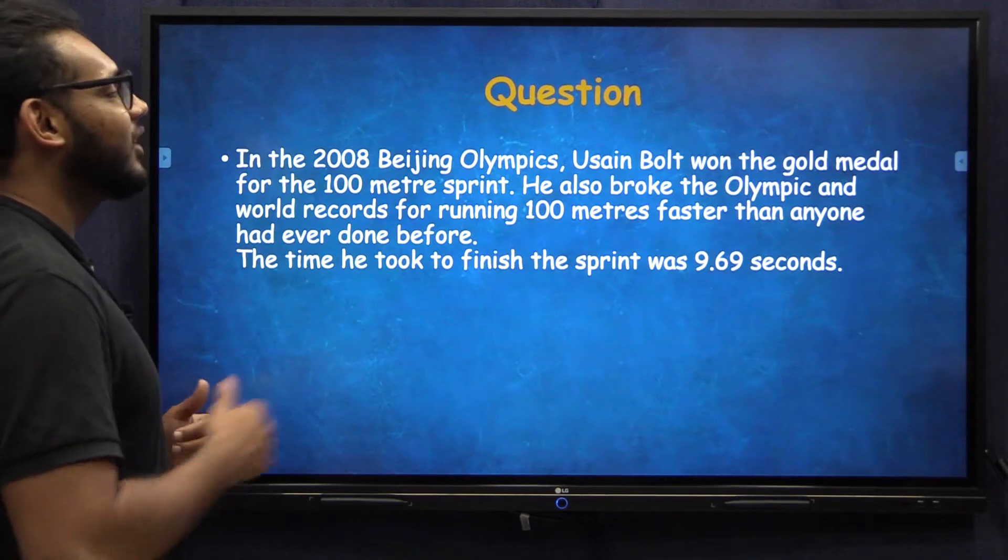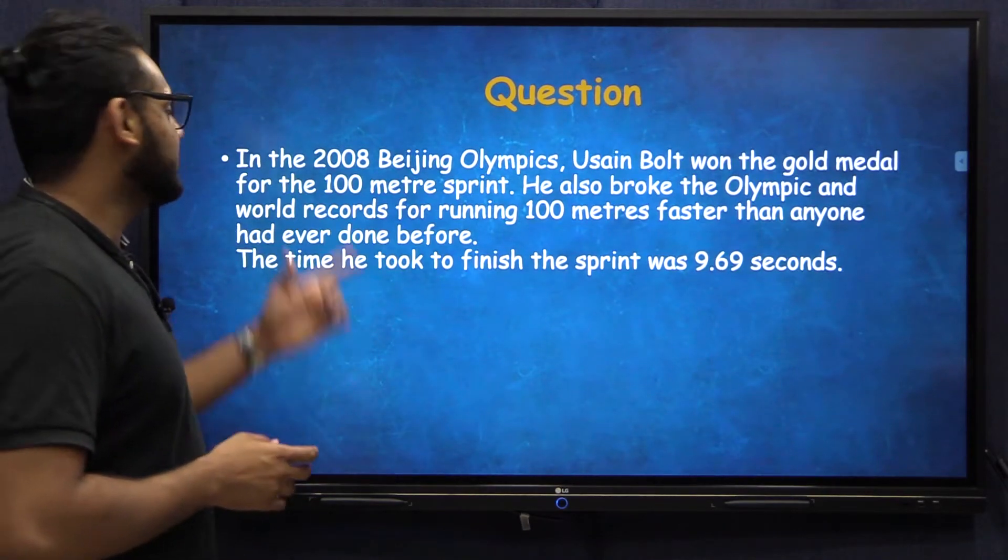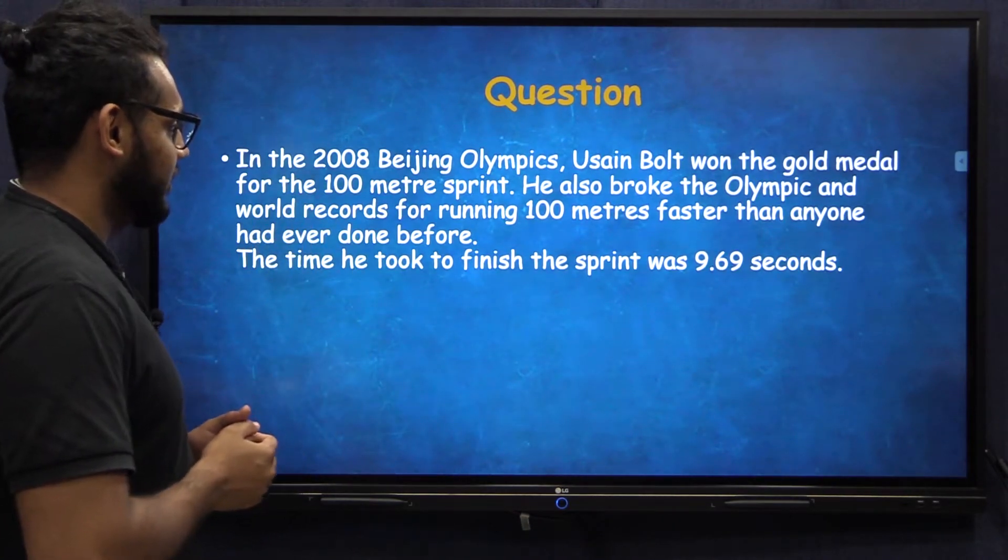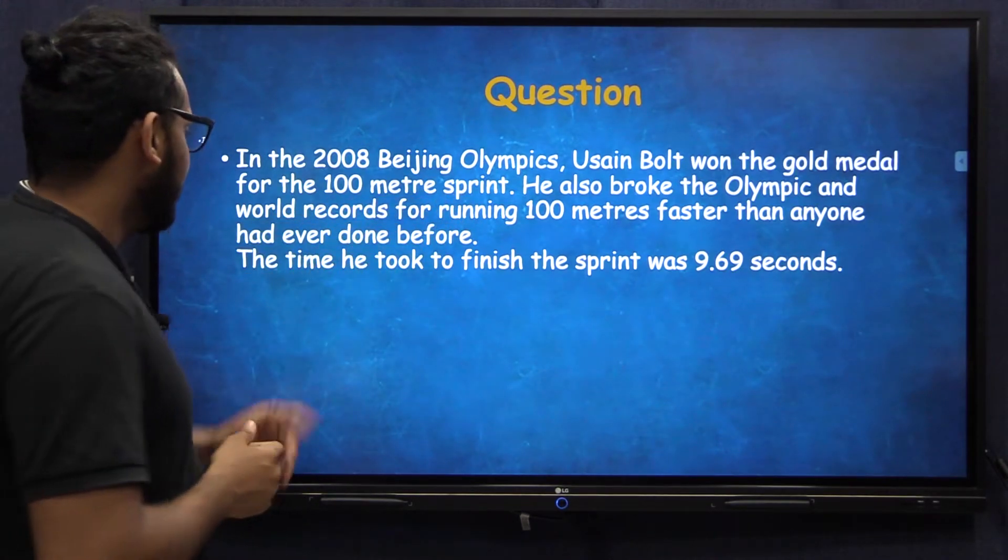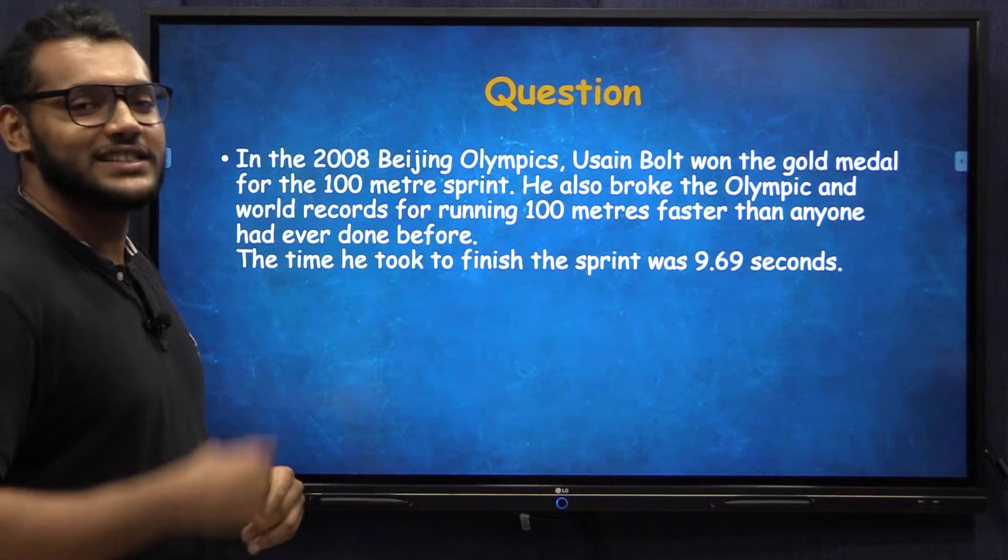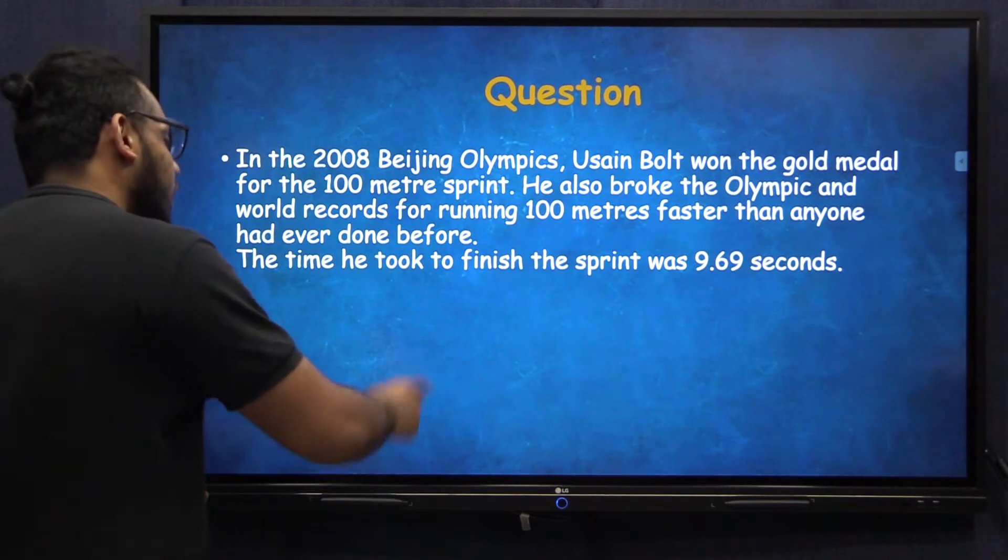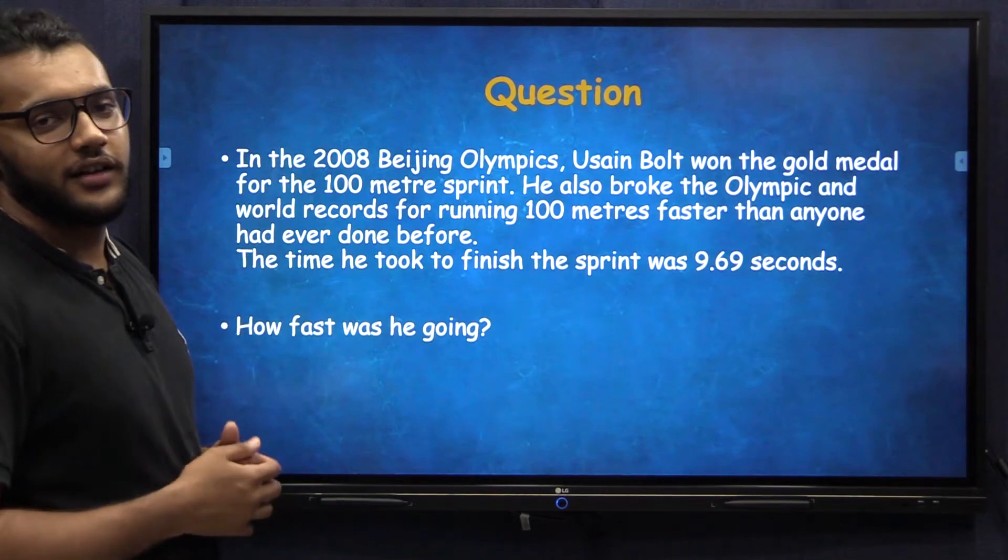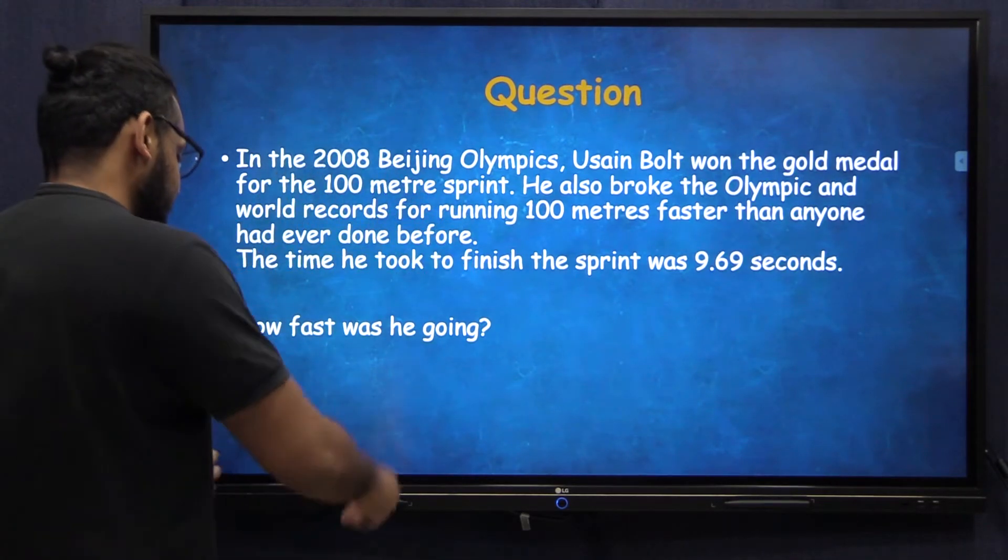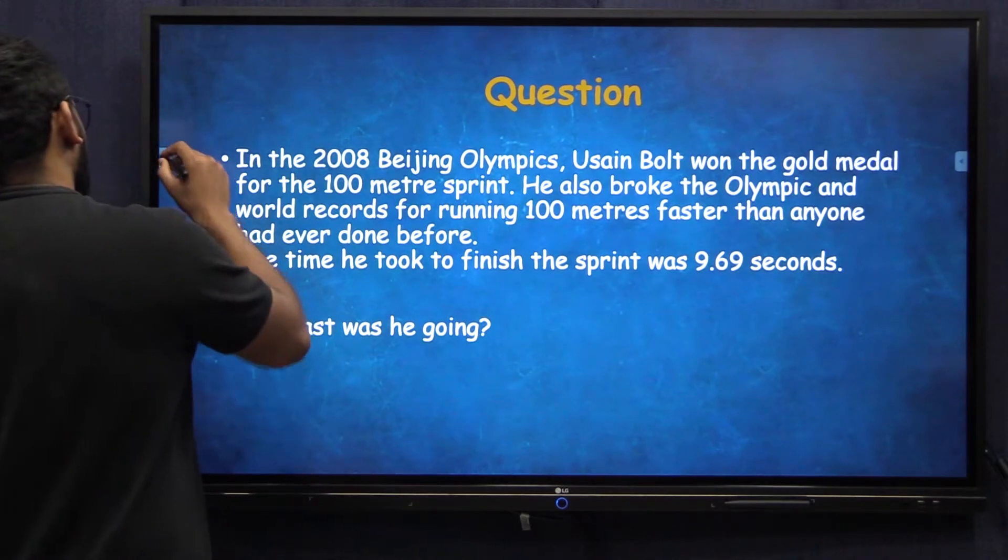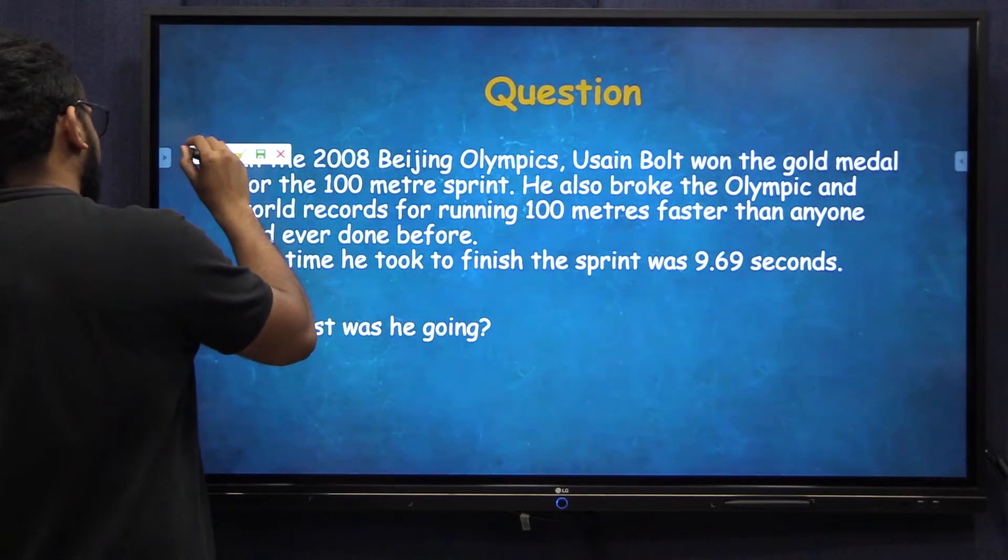Now I have a question for you. The 2008 Beijing Olympics, Usain Bolt managed to win the gold medal in the 100 meter sprint. He also broke the world and Olympic records for the 100 meters. He finished the race in 9.69 seconds. What I want you to tell me is how fast was he going? Now that means what is the speed of Usain Bolt in this race?